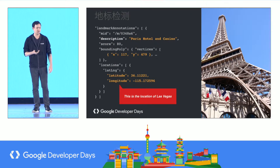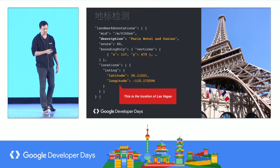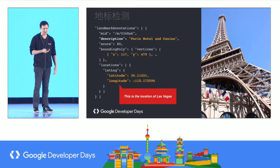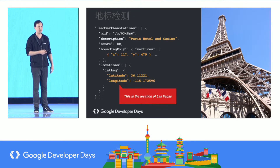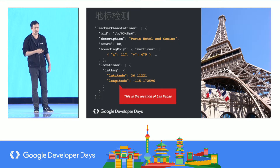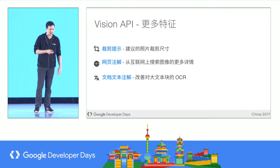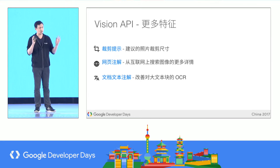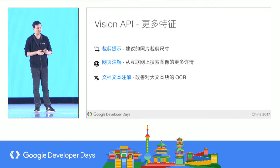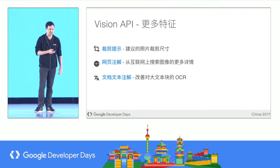Landmarks we can detect as well. I was trying to trick the machine here, but it was too clever. You might imagine this is the Eiffel Tower, but you can notice there's a building underneath. It's actually not the Eiffel Tower — the latitude and longitude are correctly identified as being in Las Vegas. This is in fact the Paris Hotel and Casino. Furthermore, we can give crop hints of where would be good dimensions to crop the photo to be aesthetically pleasing, do OCR, and annotate with web data.